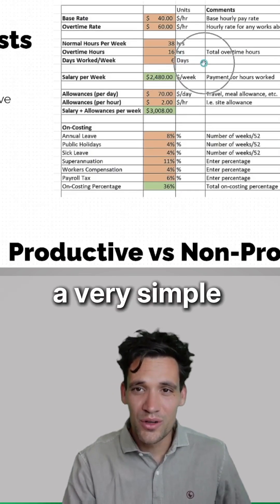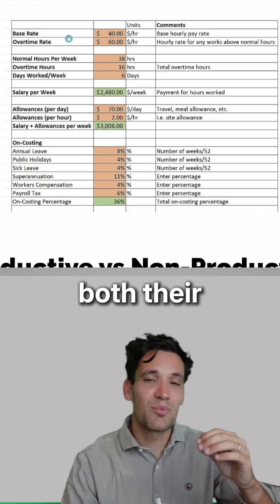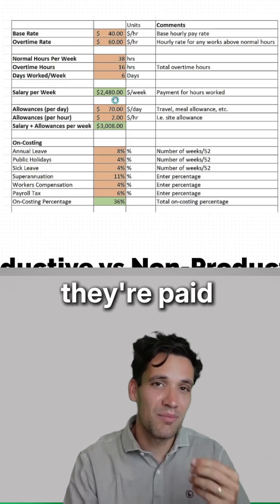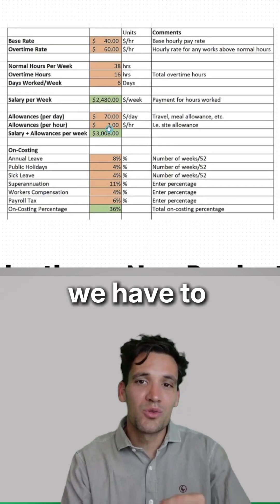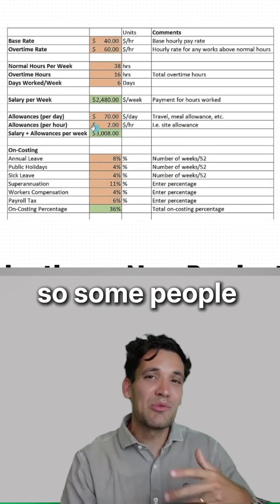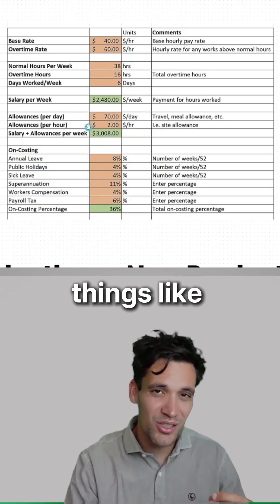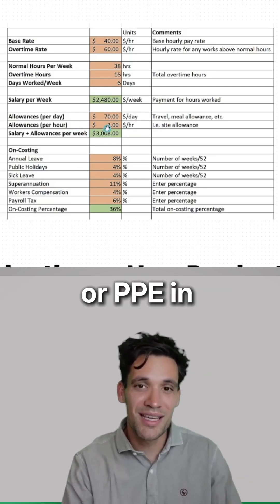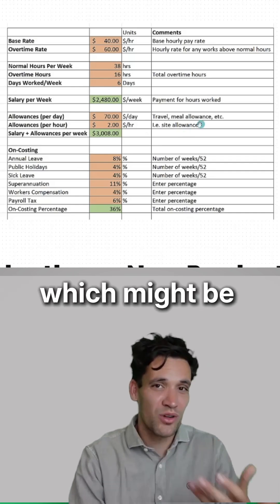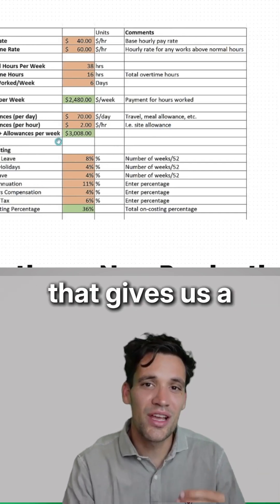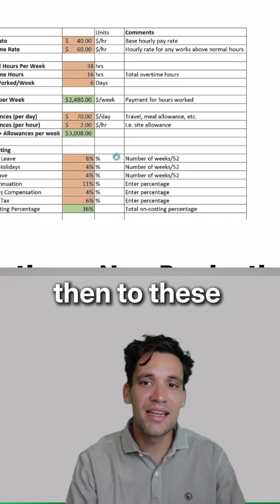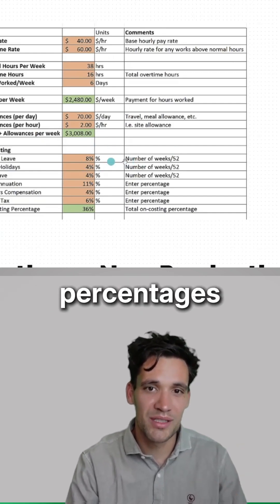To calculate these, I follow a very simple formula. You work out both from their base rate and their overtime rate how much they're paid per week. Then on top of that, we have to work in any daily allowances and allowances per hour. Some people include things like tooling, consumables, or PPE in an allowance per hour, and we also have daily allowances which might be travel or meal allowances. That gives us our total salary plus allowances for the week, and then to these we apply our on-costing percentages.